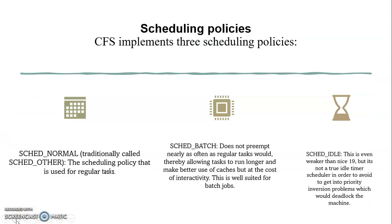There are three scheduling policies. First is SCHED_NORMAL, traditionally called SCHED_OTHER — the scheduling policy used for regular tasks. Second is SCHED_BATCH, which does not preempt nearly as often as regular tasks, thereby allowing tasks to run longer and make better use of caches, but at the cost of interactivity; this is well suited for batch jobs. The last is SCHED_IDLE, which is even weaker than nice 19, but it is not a true idle timer scheduler — this is to avoid priority inversion problems that would deadlock the machine.